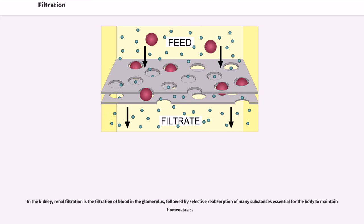In the kidney, renal filtration is the filtration of blood in the glomerulus, followed by selective reabsorption of many substances essential for the body to maintain homeostasis.